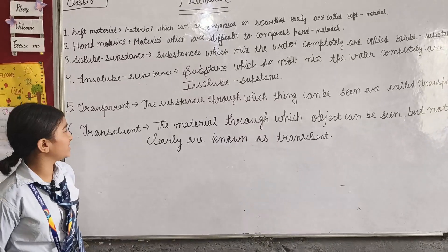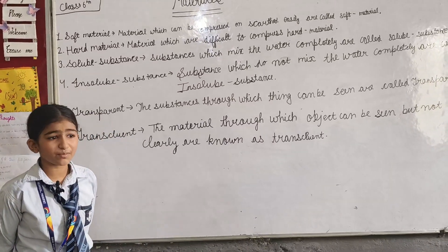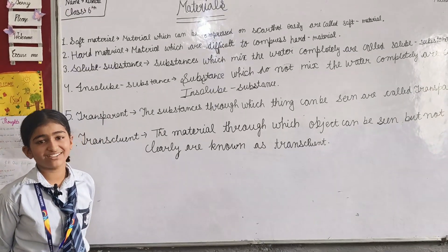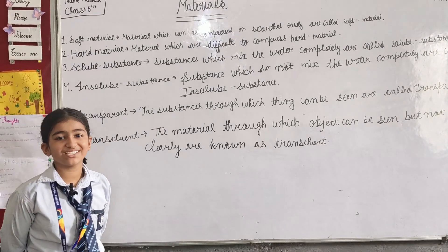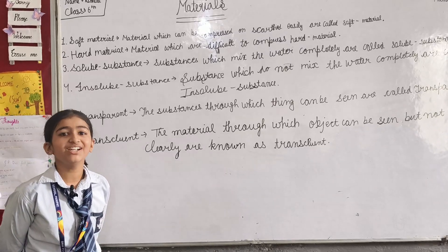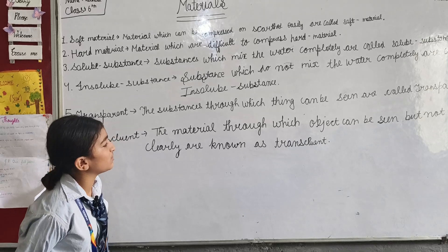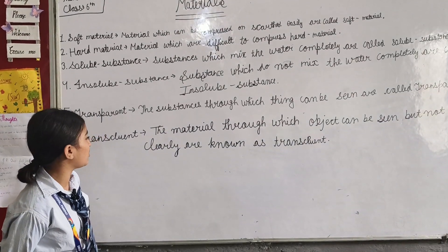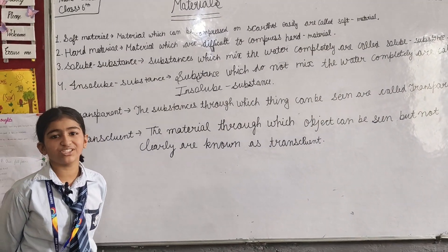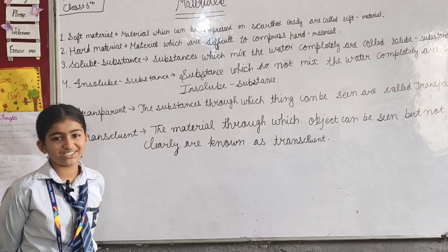Next is transparent. Substances through which things can be seen clearly are called transparent. For example, water and glass utensils.